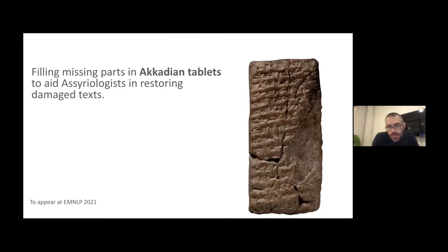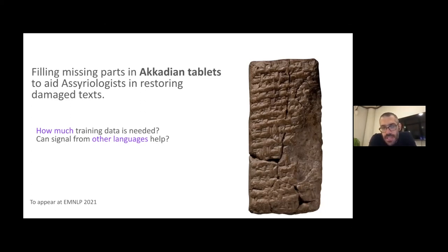In the process of addressing this project, there are two major larger research questions that we address. First is how much training data is needed to do this task. The setting is such that we have a scarce amount of data, definitely compared to English. A research question is whether the amount of data that we have in Akkadian supports this kind of applications. And second, while we don't have a lot of signal in Akkadian, we ask whether signals from other languages can help us address this task.